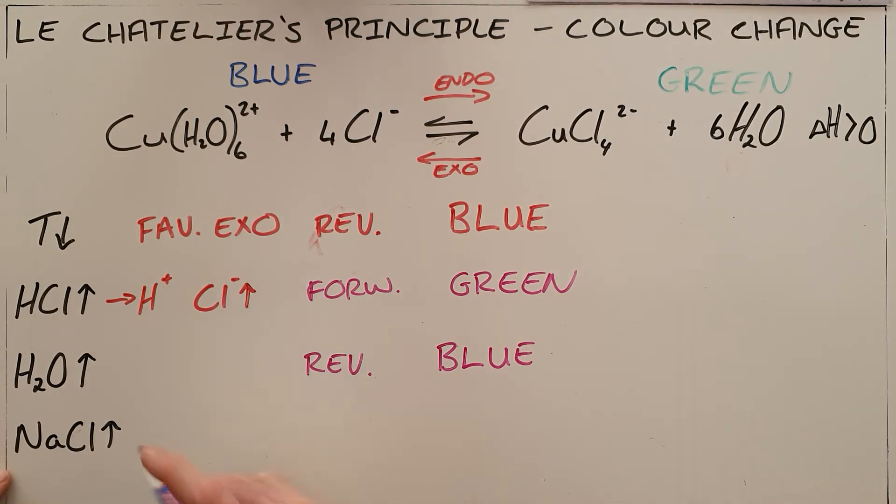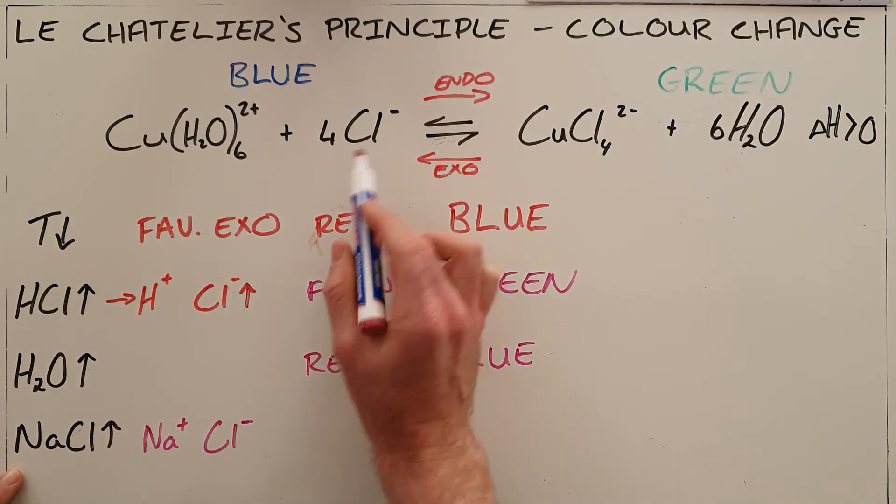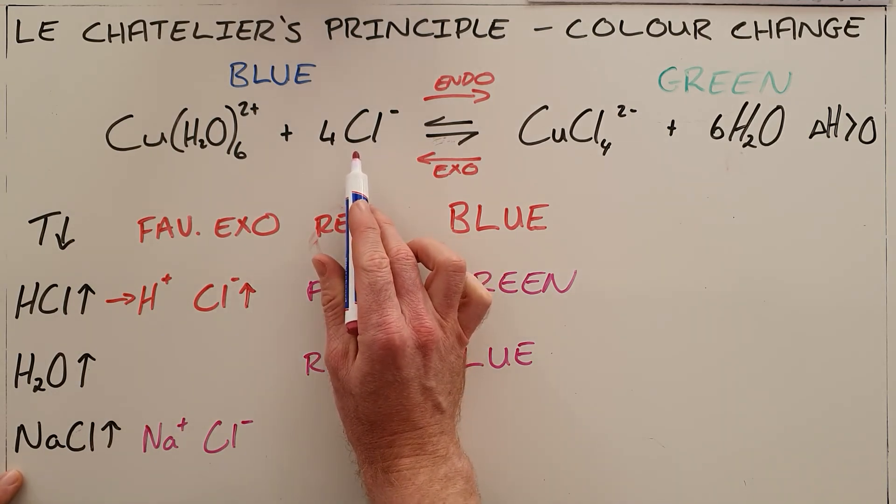And finally, the question asks what happens if we add sodium chloride to this reaction. Once again, we know that sodium chloride is an ionic compound which would dissolve into sodium and chlorine. So once again, we are increasing the chlorine ion concentration.